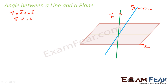Please note: the angle θ shown here is the angle between the direction vector v and the normal n, but this is NOT the angle between the line and the plane. The angle between the line and the plane is actually 90 minus θ.